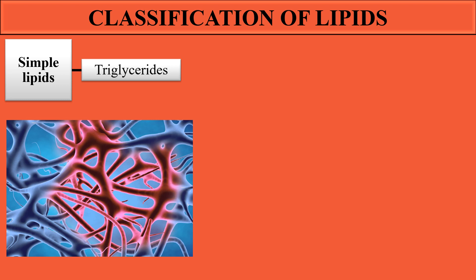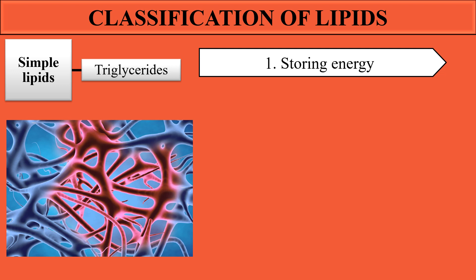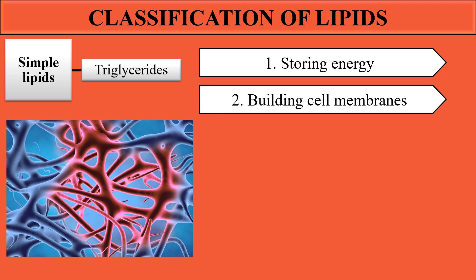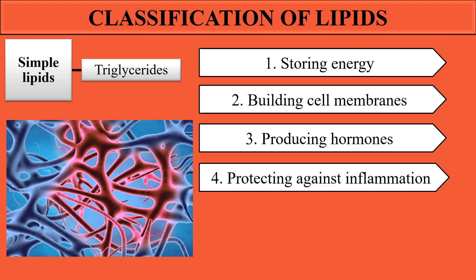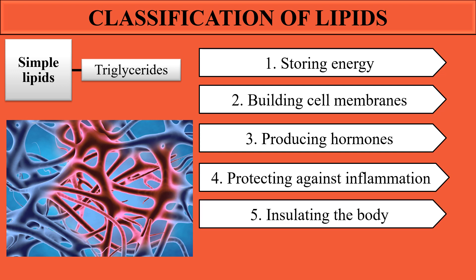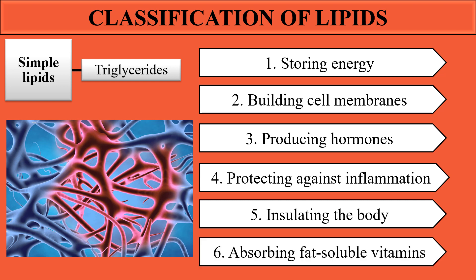What are the functions of triglycerides? They are also known as neutral fats in the body. They are involved in storing energy, building cell membranes, and producing hormones like testosterone and estrogen. They also protect against inflammation by promoting the production of immune cells, and they insulate the body by providing cushion and protecting it from injuries.